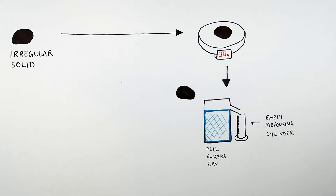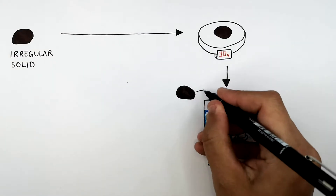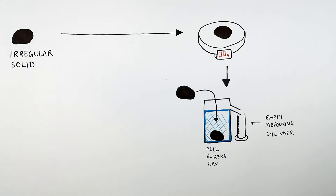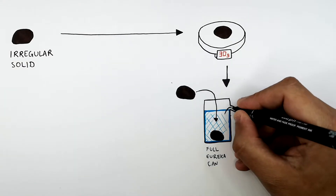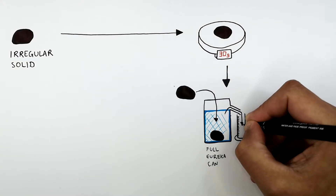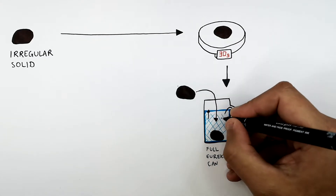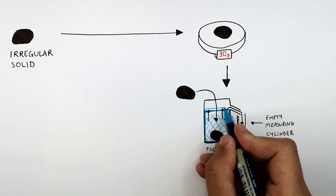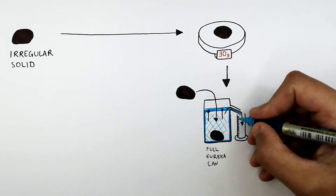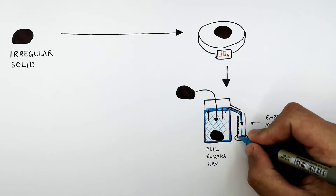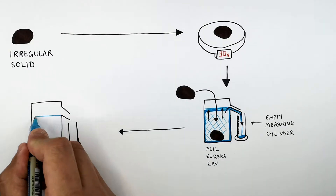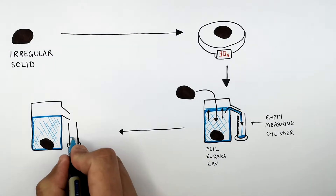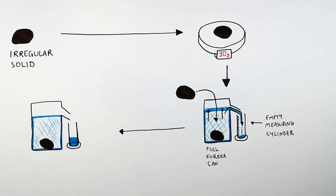You then get your irregular shaped solid and place it into the full Eureka can. This irregular shaped solid is then going to displace the water — it's going to force the water to rise because it is displacing the water. So any water that rises is going to be transferred into the empty measuring cylinder. And the volume of this water displaced from the Eureka can is going to equal the volume of the irregular shaped solid.